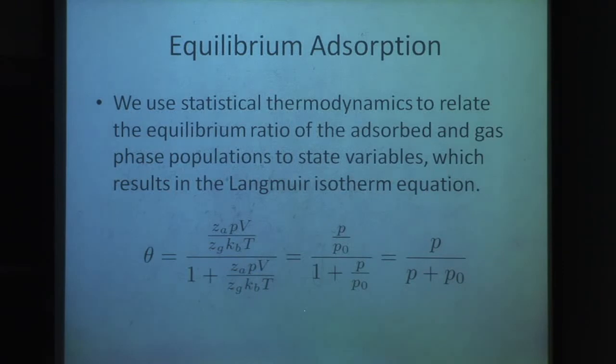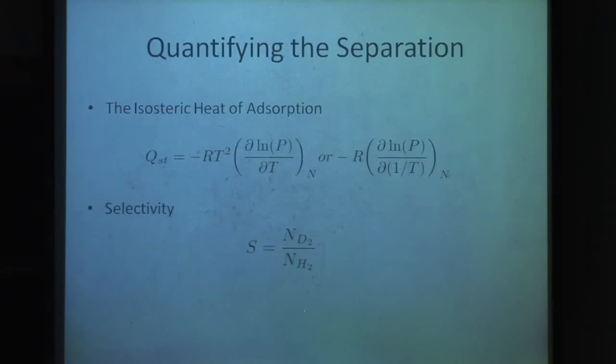Using statistical thermodynamics, we come up with an expression to relate the amount of species adsorbed inside the lattice to our state variables. Here θ represents the amount adsorbed over the total number of adsorption sites. P is the pressure above the adsorbate, and P₀ is a thermodynamic quantity that's basically a function of the energy levels of the adsorbed and gas-phased molecules and the volume and temperature of the system. We use the isosteric heat of adsorption, which is the log of pressure versus temperature for a fixed N where N is the amount adsorbed. It's basically the change in enthalpy when the molecule is adsorbed and is a good measure of the binding energy.